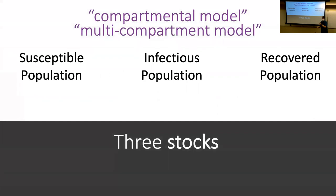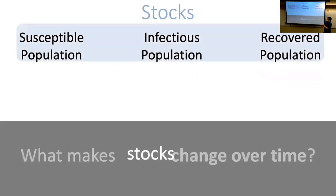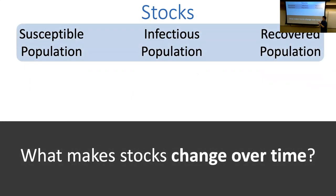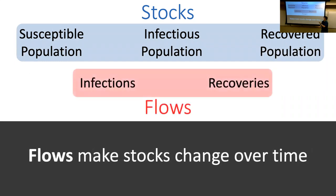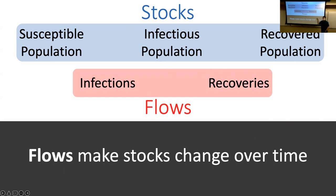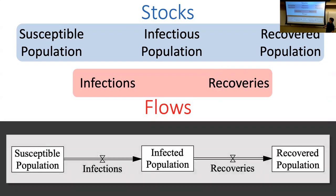These are our state variables — our stocks. At any snapshot of time I can ask: how many susceptibles, how many infectious, and how many recovered are currently out there? Stocks change with flows, so to model the dynamics we need flows: the number of infections, which translates people from susceptible to infectious, and then recoveries. You could also imagine a death flow — people who instead of going to recovered go to a death stock, allowing us to track mortality over time.